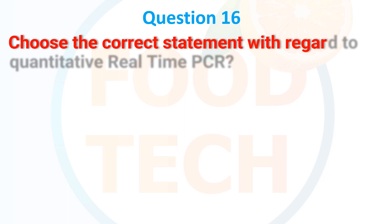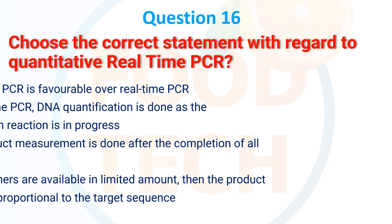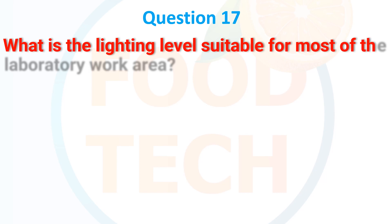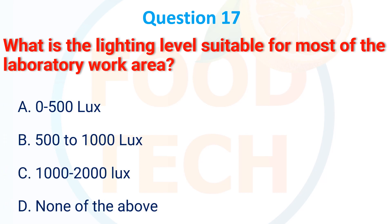Which is the correct statement with regards to quantitative real-time PCR? A. Endpoint PCR is favorable over real-time PCR, B. In real-time PCR, DNA quantification is done as the amplification reaction is in progress, C. The product measurement is done just after the completion of all cycles, D. If the primers are available in limited amounts, the product obtained is proportional to the target sequence. The correct answer is B. The lighting level suitable for most laboratory work areas is A. 0 to 500 lux. The correct answer is 0 to 500 lux.